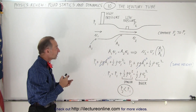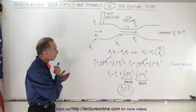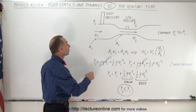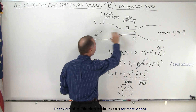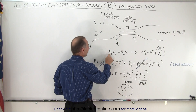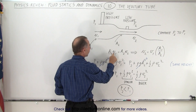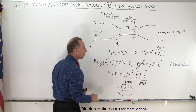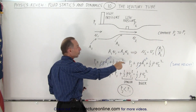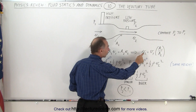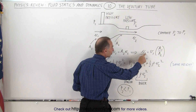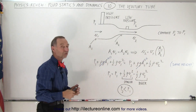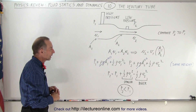First, we know that the volume of fluid — in this case air — must be the same throughout the tube. So the product of the cross-sectional area times velocity must be equal anywhere along the tube. Using that equation, we can calculate velocity 2 relative to velocity 1 by the ratios of those cross-sectional areas.